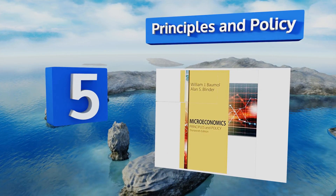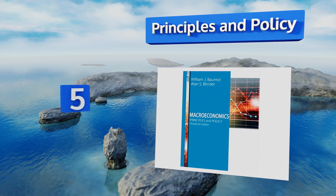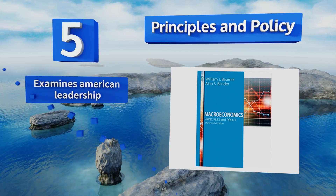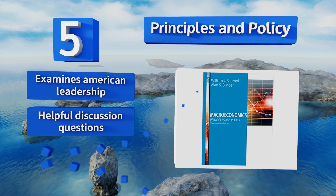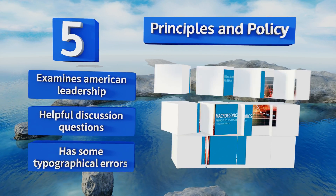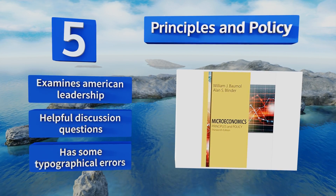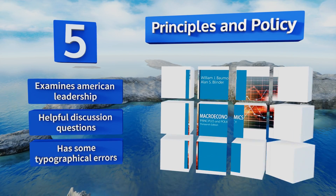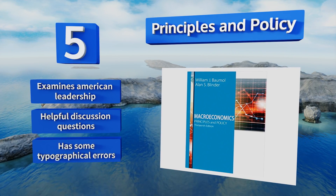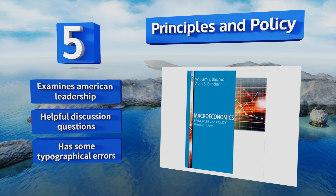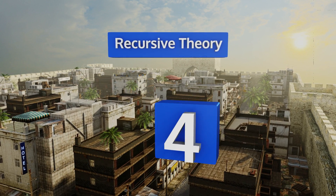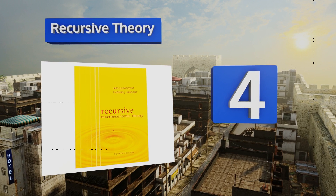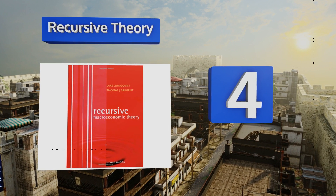Halfway up our list at number five, now in its 13th edition, Principles and Policy is a respected text penned by distinguished economists dedicated to giving pupils a solid grounding in the subject. It skillfully relates recent policy developments to core concepts and is brimming with compelling visuals. It examines American leadership and includes helpful discussion questions, but there are some typographical errors.